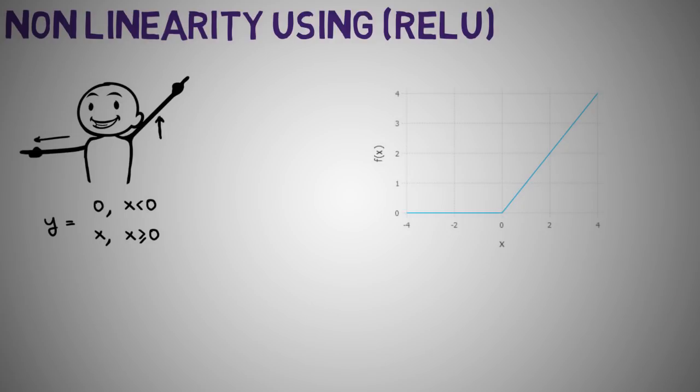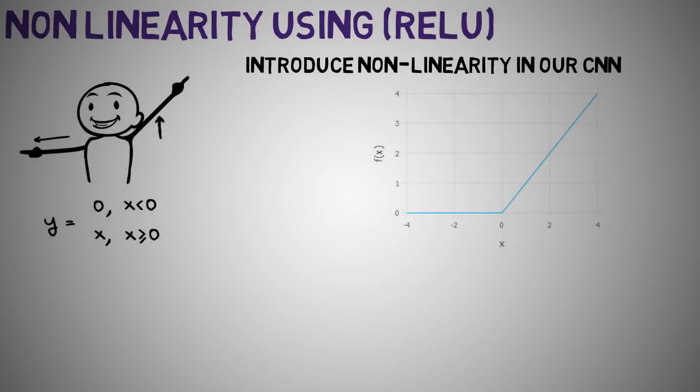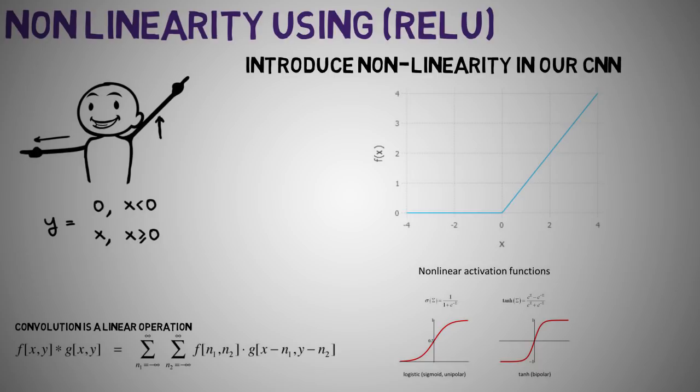Non-linearity using ReLU. In our lecture on ANNs we discussed the rectified linear unit or ReLU activation function which is a nonlinear operation. ReLU is used after every convolutional step. ReLU is an element-wise operation applied per pixel and replaces all negative values in the feature map by zero. The purpose of ReLU is to introduce non-linearity in our CNN since most of the real-world data we want our CNN to learn would be nonlinear. Remember that convolution is a linear operation, or rather an element-wise matrix multiplication and addition, so we account for non-linearity by introducing a non-linear function like ReLU.